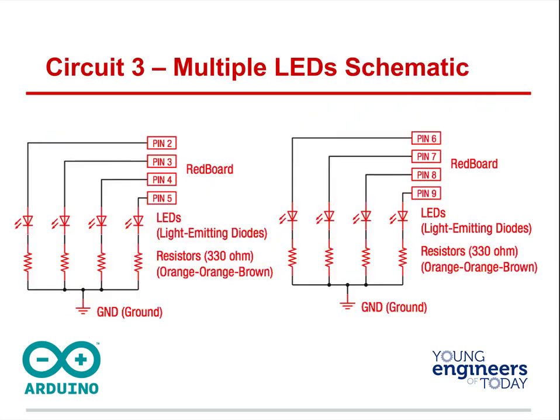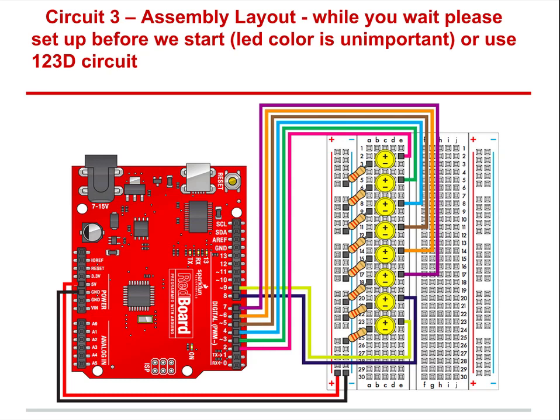Now we're going to get to multiple LEDs — you'll need eight LEDs. You need your 330-ohm resistor and your LEDs. The cathode or negative leg goes down, the anode — the positive or longer leg — connects to each pin. Pins two, three, four, five, six, seven, eight, nine — start at two, end at nine. If you don't have that set up yet, go ahead and pause, hook it up, then come back.